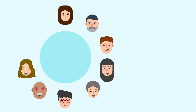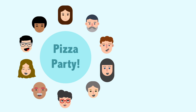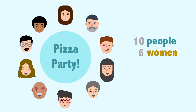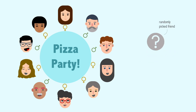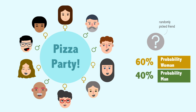Elle and her group of close friends decided to have a pizza party. In her friend group, there are 10 people including Elle. Six of them are women and four of them are men. So that means that if we were to pick one friend at random, there's a 60% probability that the friend is a woman and a 40% probability that the friend is a man.